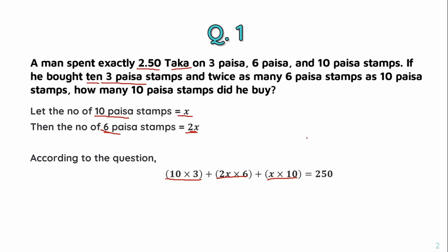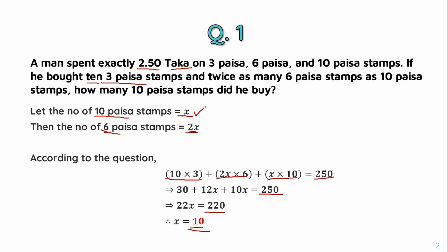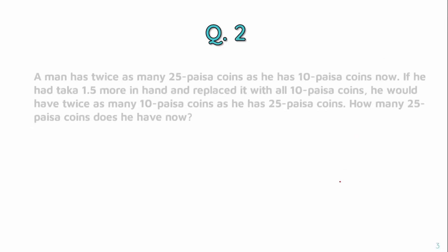Overall, the total equals 2.5 takar. Solving the equation, the number of 10-pausa stamps is 10.